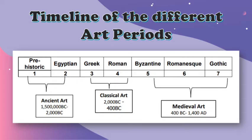Here is the timeline of the different art periods that we are going to talk about. First is the prehistoric and Egyptian arts during 1.5 million BC to 2000 BC. BC means before Christ. Second art period is the Greek and Roman art during 2000 BC to 400 BC. And the last one is the Byzantine, Romanesque, and Gothic period during 400 BC to 1480.